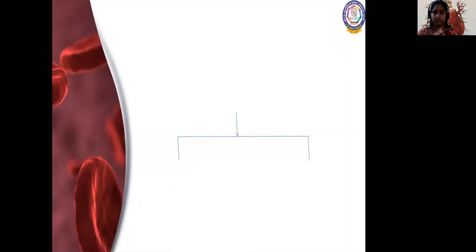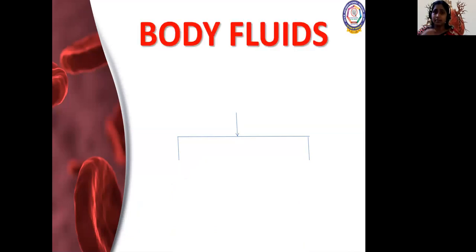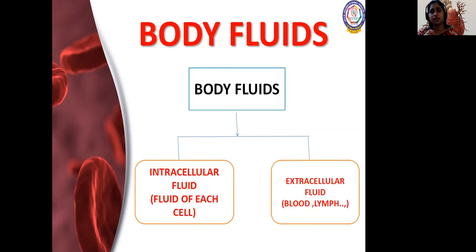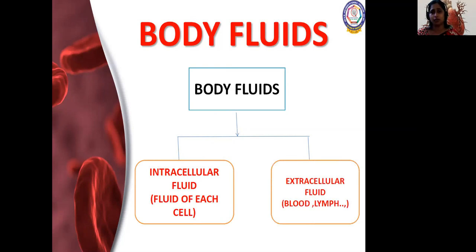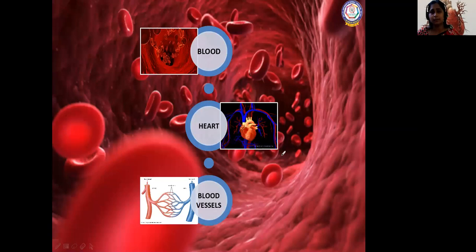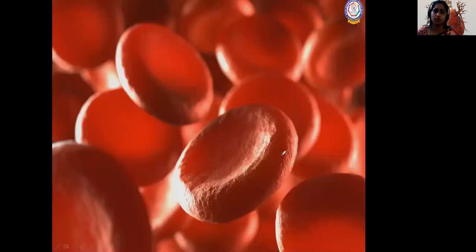First we'll talk about body fluid, categorized into two types. The first is intracellular fluid — the fluid seen inside the cell. The second is extracellular fluid — outside the cell, like blood and lymph. The three major things we are going to deal with are: number one, the heart; number two, blood; and number three, blood vessels. We'll start with blood.